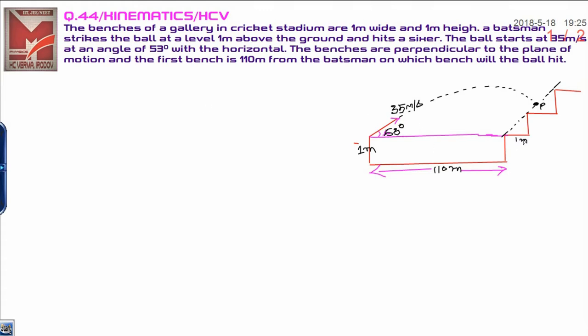Benches of a gallery cricket stadium, I have shown over here. Its width is 1 meter and height is also 1 meter. A batsman hit the sixer with angle 43 degrees and the initial velocity is 35 meters per second.